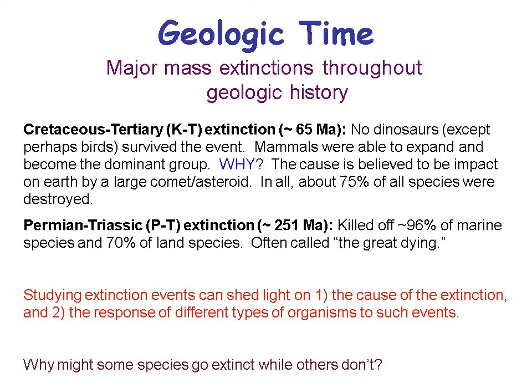We think that at the Cretaceous-Tertiary extinction, about 75% of all species were destroyed. The Permian-Triassic extinction, much older than that, killed off about 96% of marine species and 70% of land species — it's often called the Great Dying.